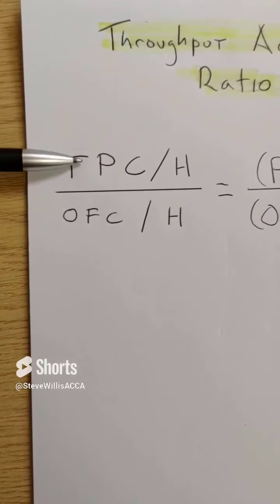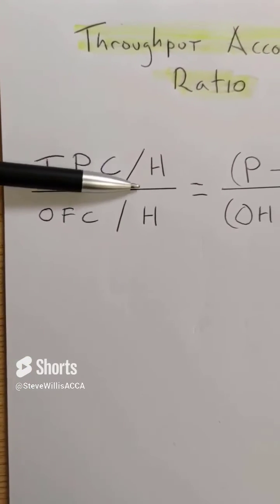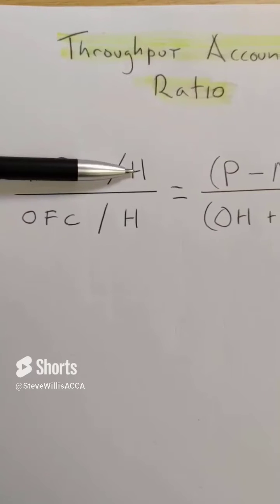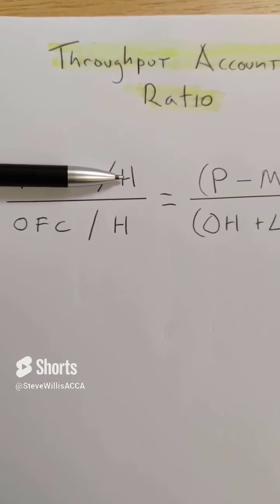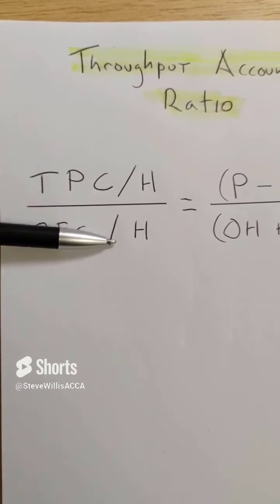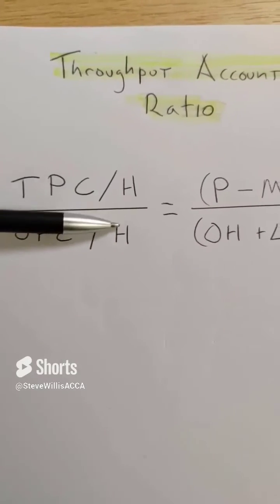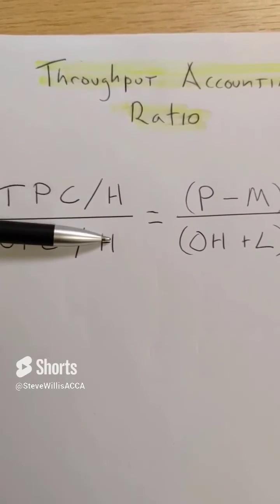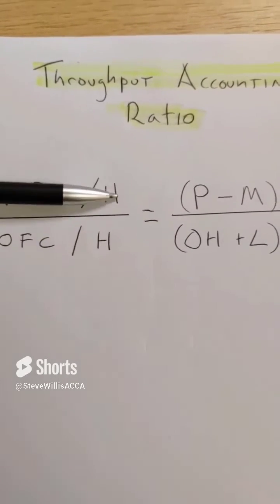Which is throughput contribution per hour, that's on the bottleneck resource, that's not the total production time, over the other factory costs per hour. It could be minutes, as long as the time is consistent, that's fine.